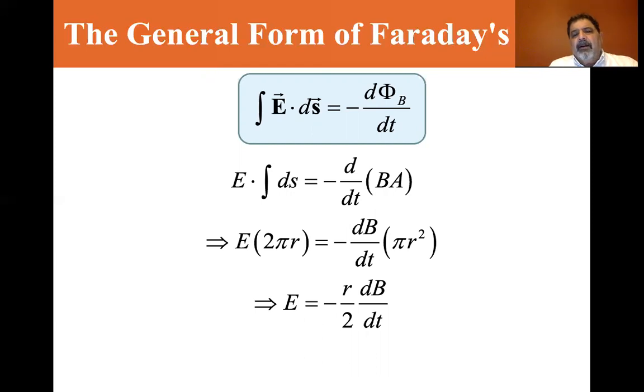is equal to minus dB/dt of πr². The B is pulled out of the equation, and the area is πr². We see that we have πr on either side, and we divide both sides by 2πr. We end up with E equals minus r over 2 dB/dt, the changing magnetic field.